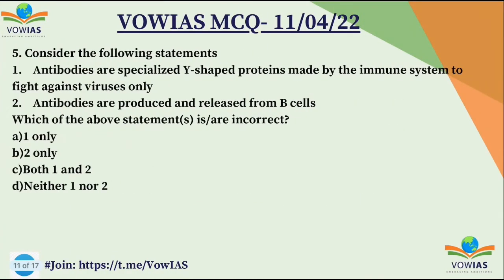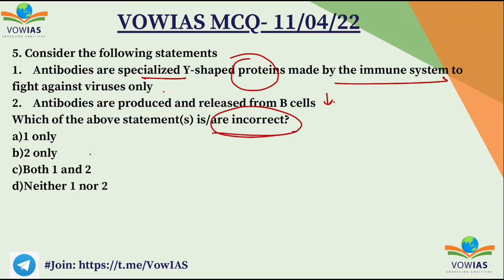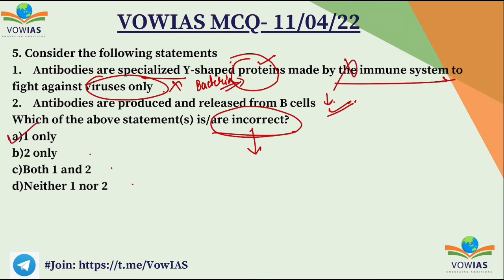Now for the fifth and final question. Consider the following statements. First, antibodies are specialized Y-shaped proteins made by the immune system to fight against viruses only. Second, antibodies are produced and released from B cells. We have to choose the incorrect statement. Options: A) 1 only, B) 2 only, C) 1 and 2, D) neither 1 nor 2. The second statement is correct — antibodies are indeed produced and released from B cells. But the first statement is wrong because antibodies fight against bacteria and other pathogens as well, not viruses only. So the correct answer is A — 1 only.